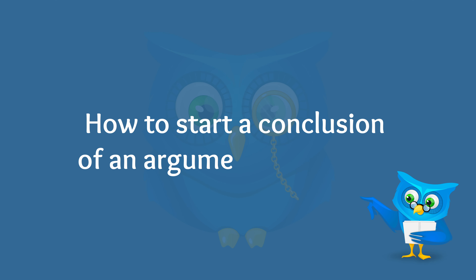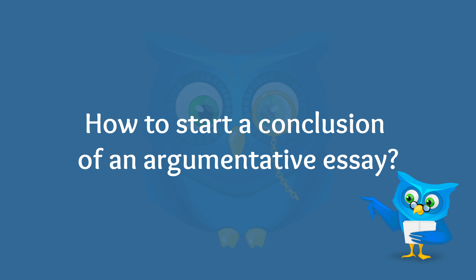How to start the conclusion of an argumentative essay? A good tip is to restate your main argument. You can either restate a claim and some facts, or you can do this in the form of a question. When leading into the end, make sure you make a good transition from the rest of your paper so the reader doesn't break off without hearing what you have to say.